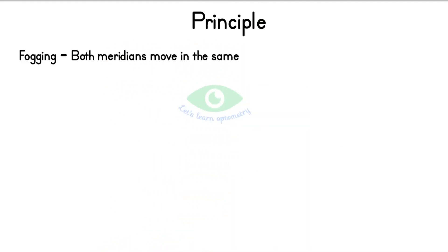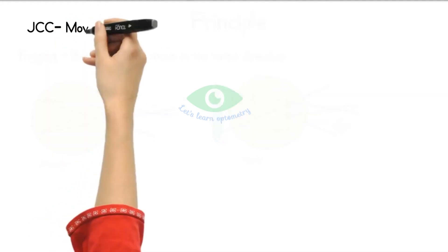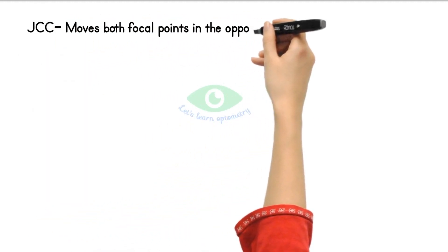That is, it gets focused in front. The vergence of both meridians increases. During JCC, it moves both focal lines in the opposite direction, that is, it moves both focal lines either towards the retina or both focal lines away from the retina.